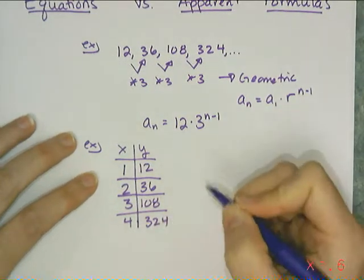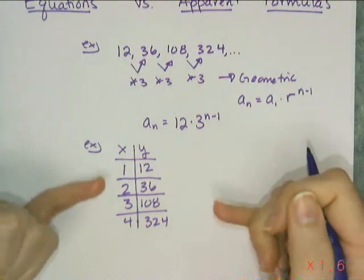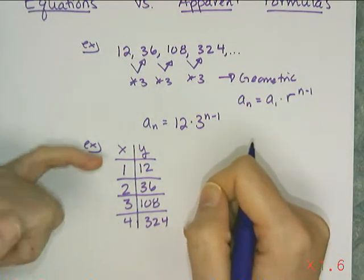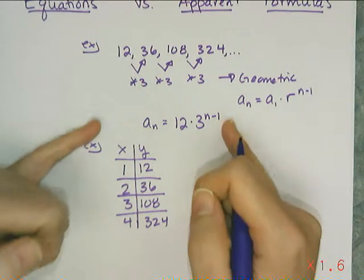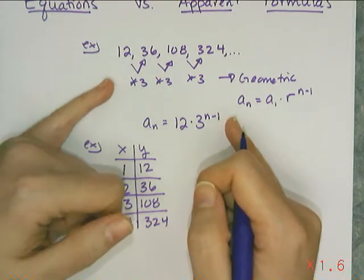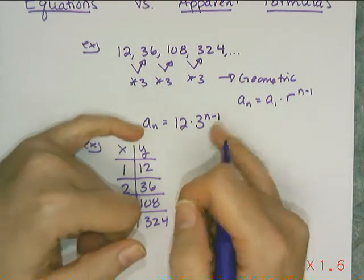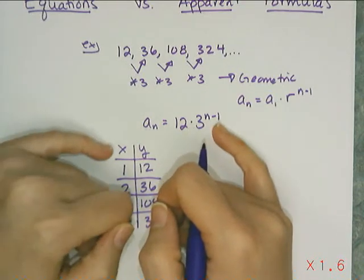And if I want to write an equation for this table, or find the equation that generates this table, then I do the exact same thing I did here. The difference is, instead of using a_n, I'm going to use y, and instead of using n, I'm going to use x.